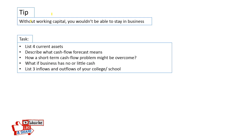Without working capital, you won't be able to stay in business — it's that simple. Here is a task: list four current assets; describe what a cash flow forecast means in your own words; explain how a short-term cash flow problem might be overcome; describe what happens if a business has no cash or little cash; and list three inflows and three outflows of your college or school. Write your answers in the comments section below, as writing them down will help you remember them for your exam.